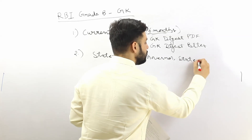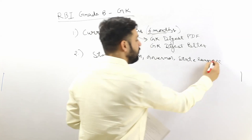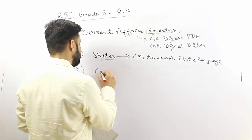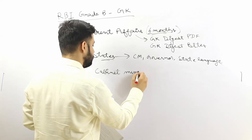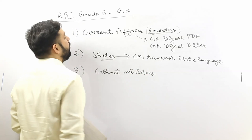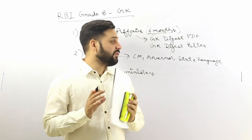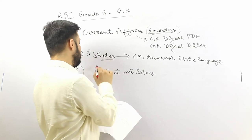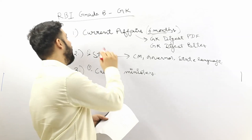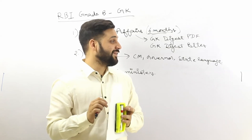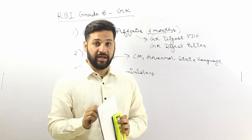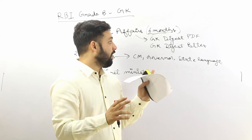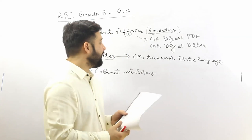Cabinet ministries are also very important. I have analyzed the RBI Grade B Phase 1 exam from the last three or four years and I have noticed you will find at least one or two questions from this chapter. The general awareness or GK section of Phase 1 of RBI Grade B is very important — it contains 80 questions, each worth one mark, out of a 280-mark paper.